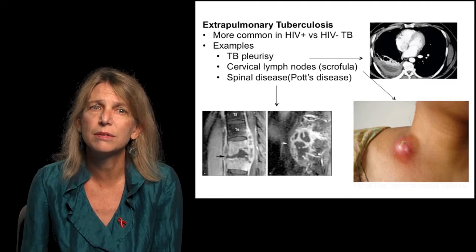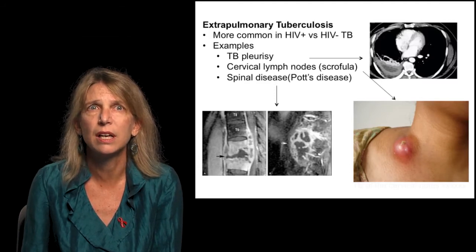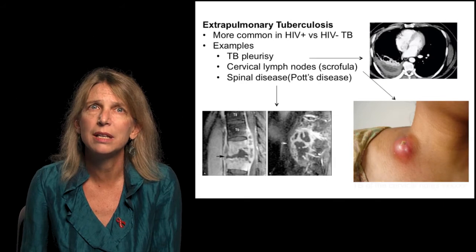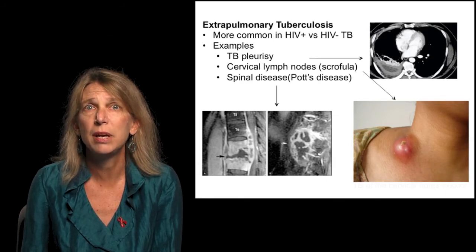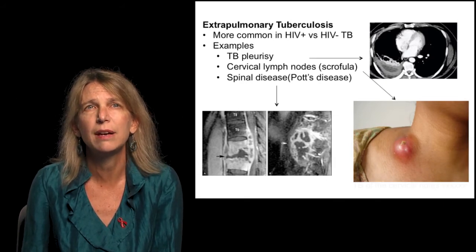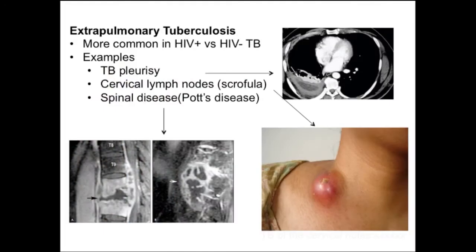Extrapulmonary tuberculosis, or tuberculosis outside of the lung, is much more common in persons with HIV compared to those without HIV who have tuberculosis. Some examples of extrapulmonary tuberculosis include TB pleurisy, cervical lymphadenopathy — also referred to as scrofula — and spinal disease, or Pott's disease.